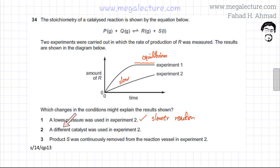Then you have the second option: a different catalyst was used in experiment two. Again, that would indicate that the reaction might be slow. So using a different catalyst would probably slow down the reaction. This is possible. A different catalyst in experiment two might have slowed down the reaction.